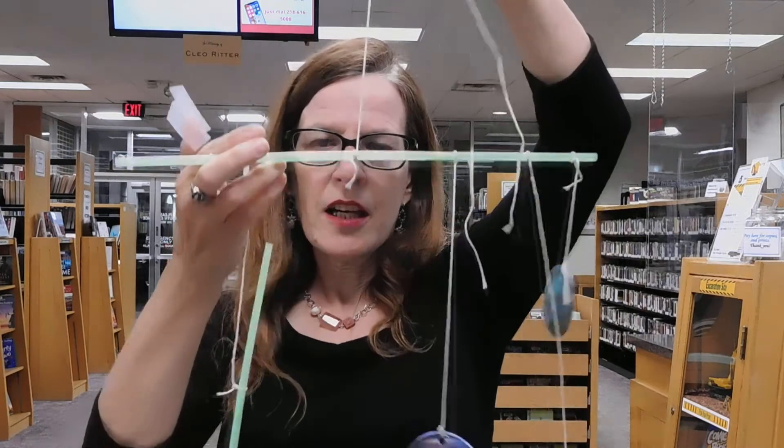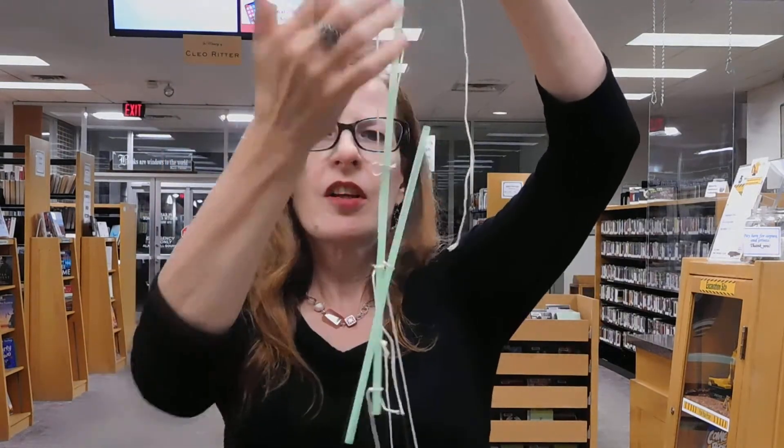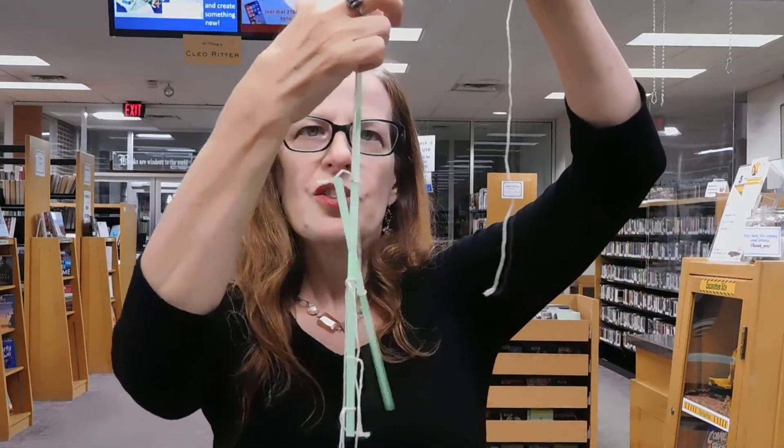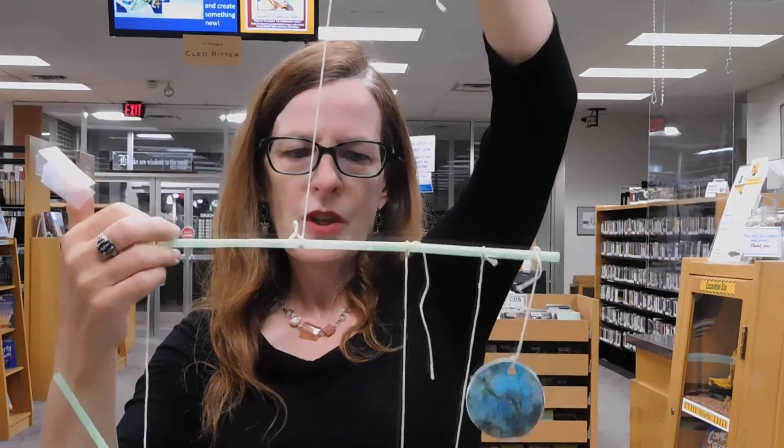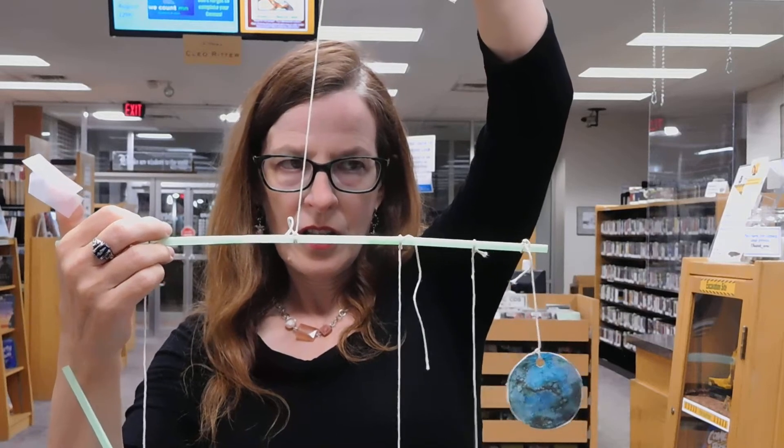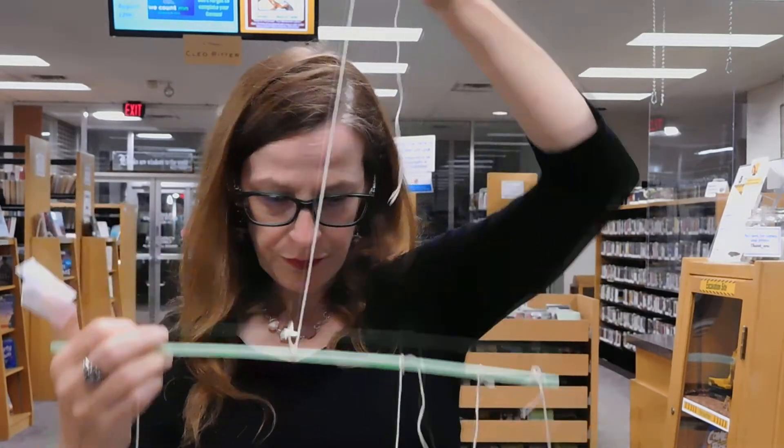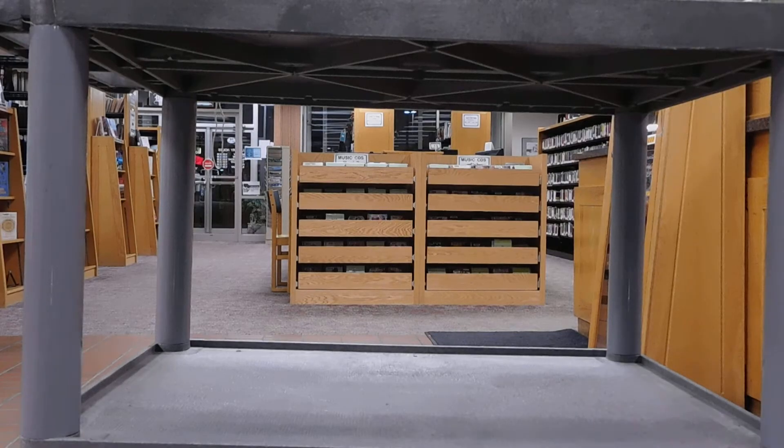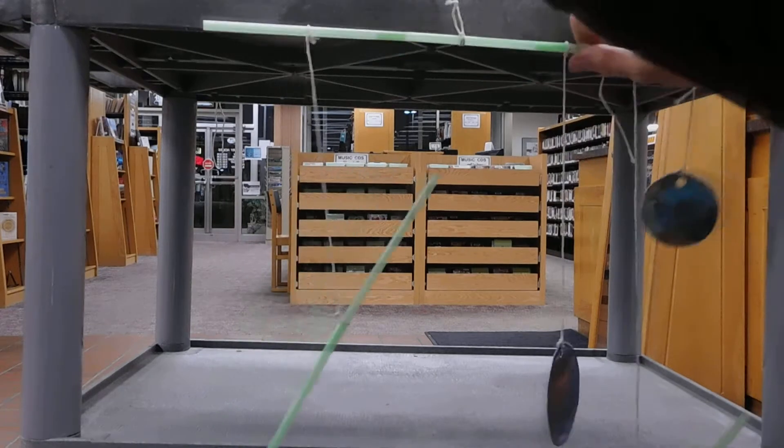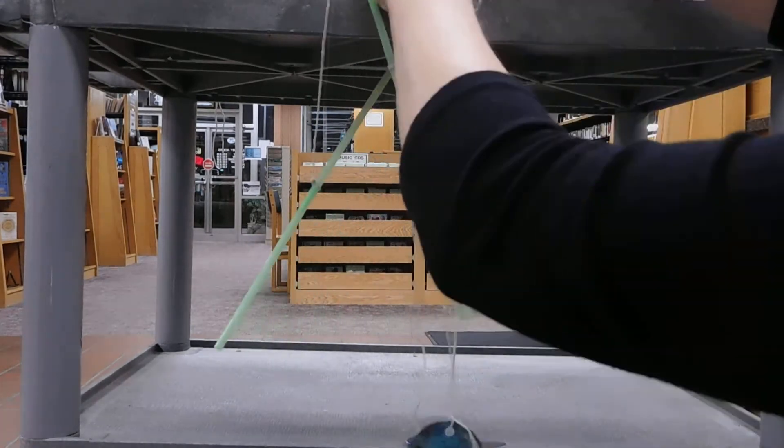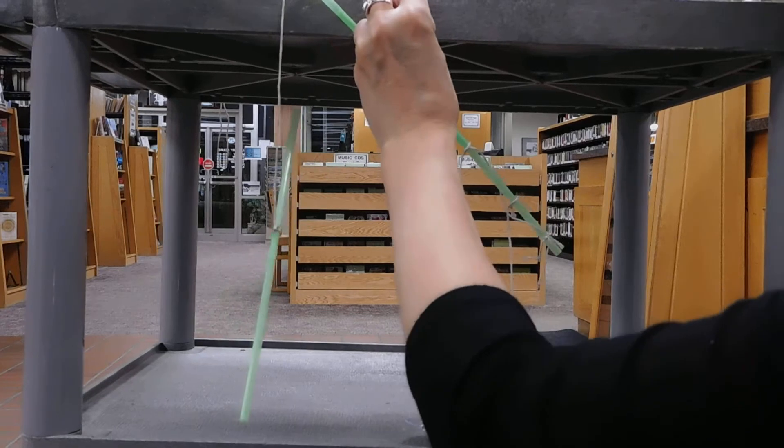And then I tied on a bigger piece of string to use as the part that's going to hold the whole mobile up. And I started attaching the planets. And for me, the easiest way to do this next part is to get some tape and tape up your mobile.